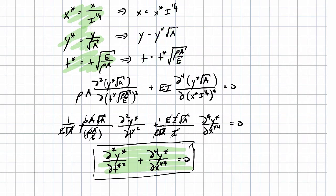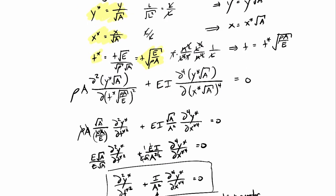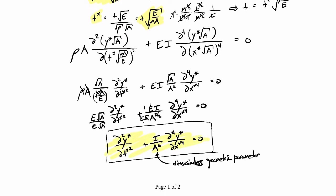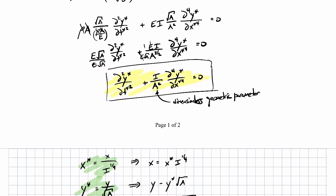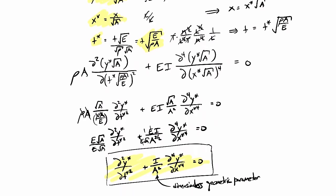These are the dimensionless x, y, and t terms. The only one that looks different from the first way we did it is the x star term — y star looks the same as previously, t star looks the same — but by choosing x star in a different manner, using I to the one-fourth instead of the square root of A, it makes the dimensionless governing equation look a little cleaner.